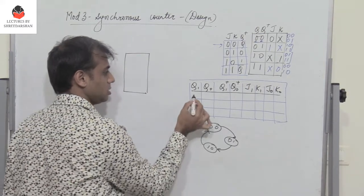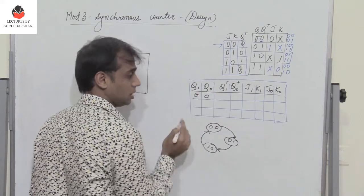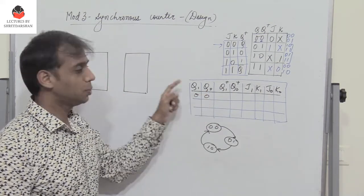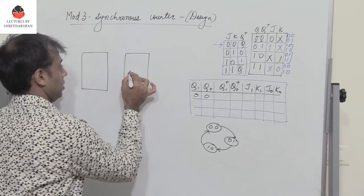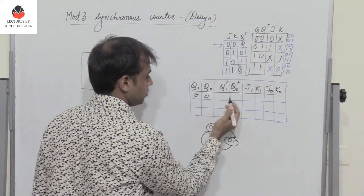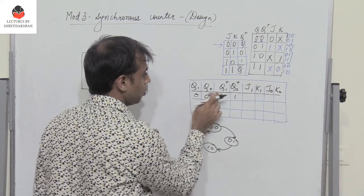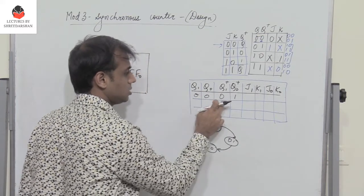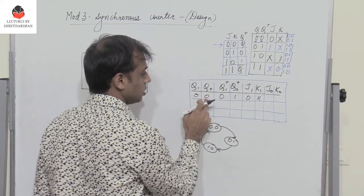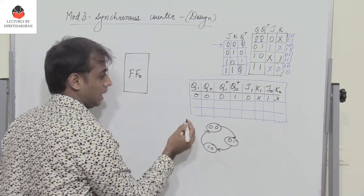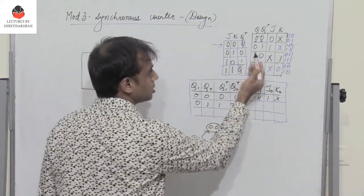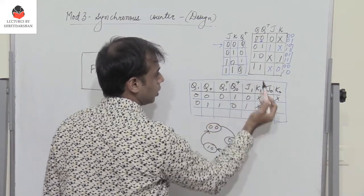Q1 is the output of the MSB flip-flop and Q0 is the output of the LSB flip-flop. Initially the state is 00 and the next state is 01: for Q1 it is 0 to 0, giving J1=0, K1=X; for Q0 it is 0 to 1, giving J0=1, K0=X. When the current state is 01 and the next state must be 10: for Q1 it is 0 to 1, giving 1 X; for Q0 it is 1 to 0, giving X 1.